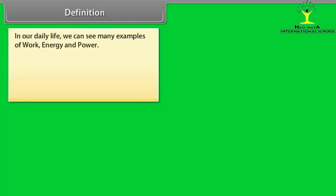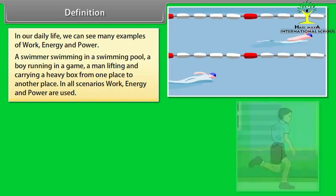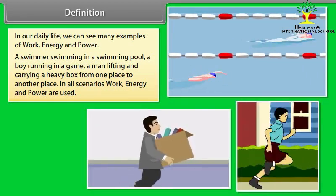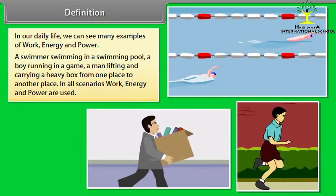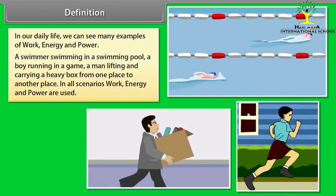Definition. In our daily life, we can see many examples of work, energy and power. A swimmer swimming in a swimming pool, a boy running in a game, a man lifting and carrying a heavy box from one place to another place. In all scenarios, work, energy and power are used.